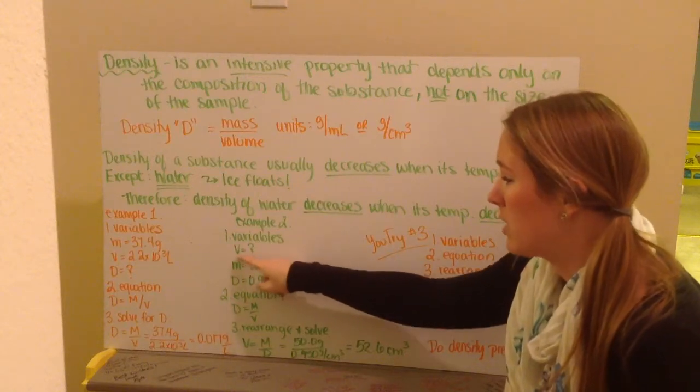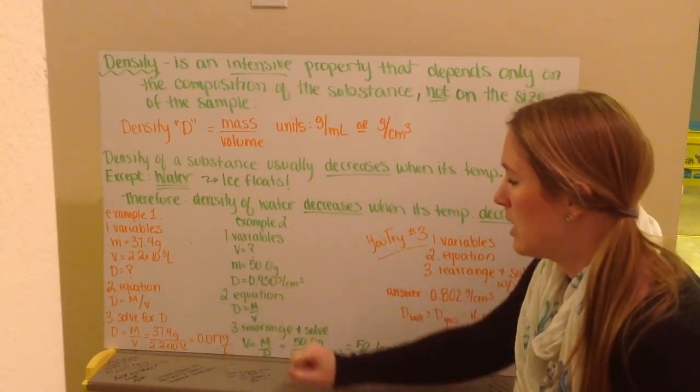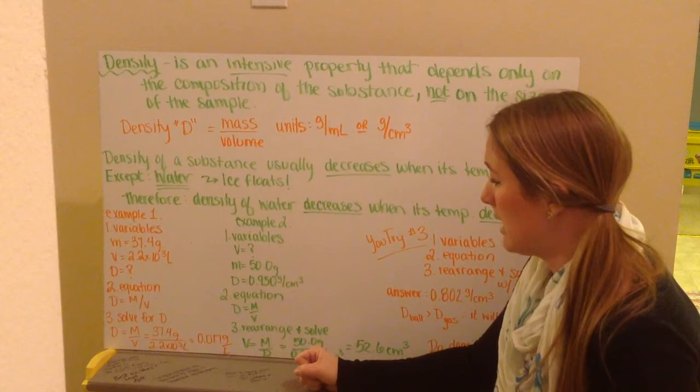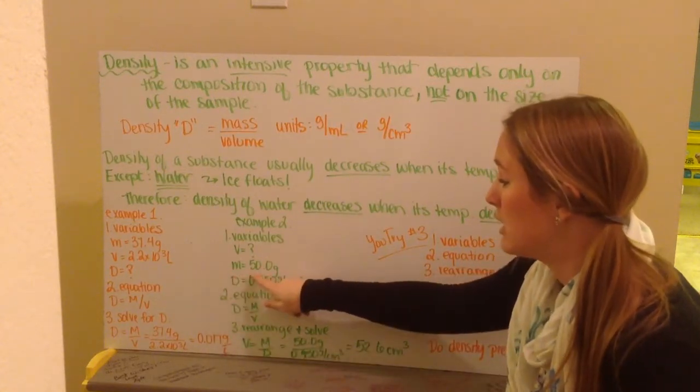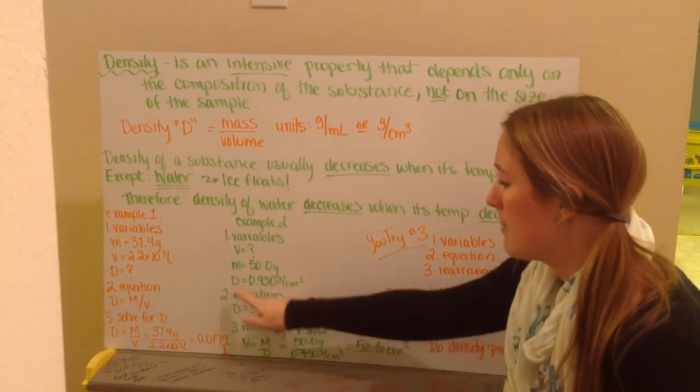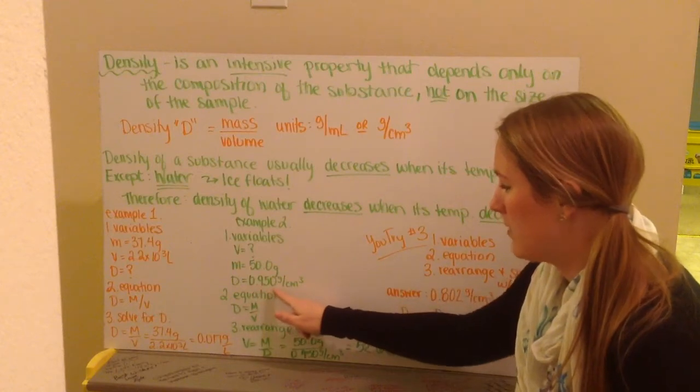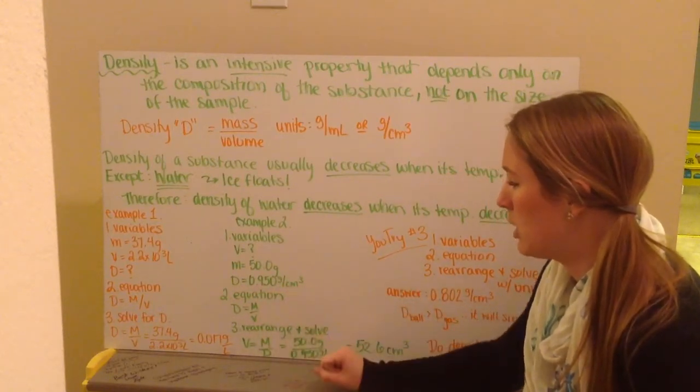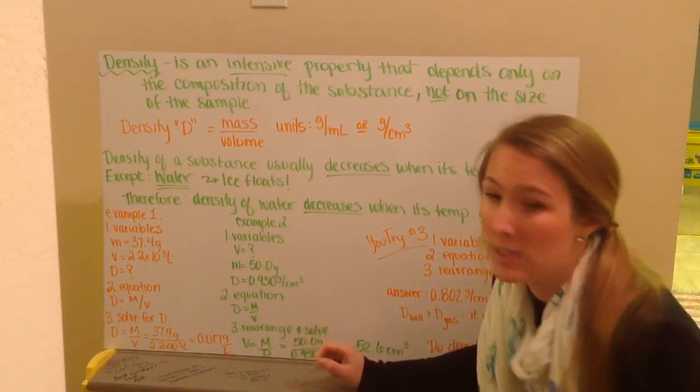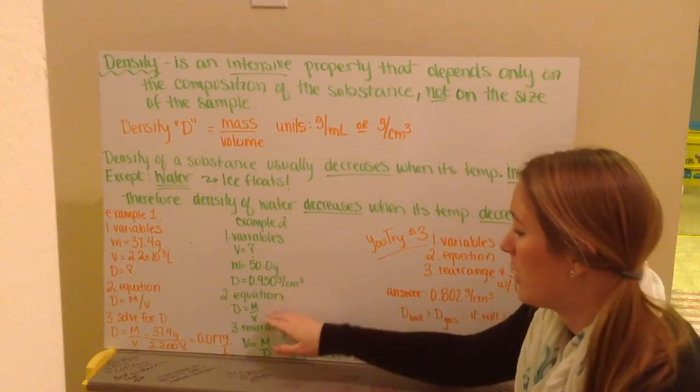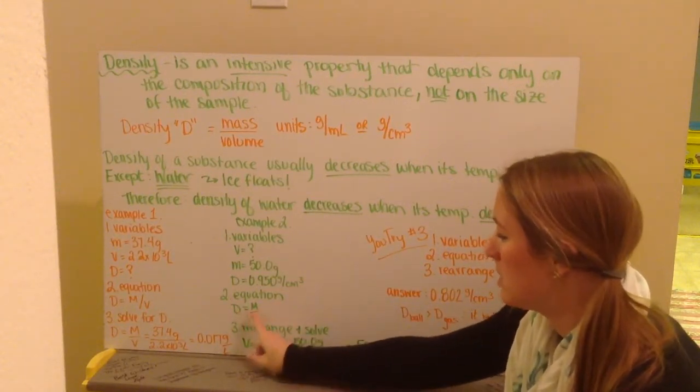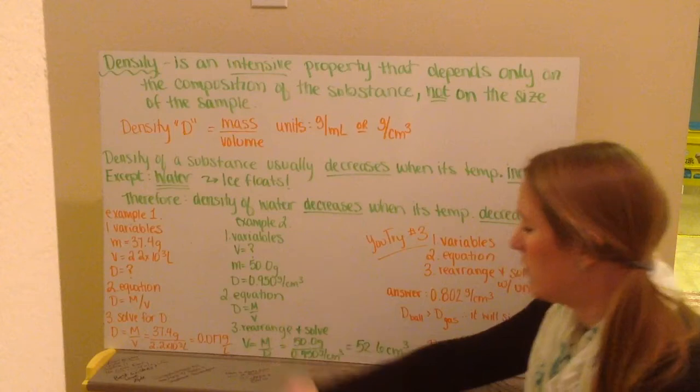We are looking for volume. So I have my volume equals a question mark because I don't know what that is yet. I'm told my mass is 50.0 grams. My density is 0.950 grams per centimeter cubed. Step number two is I write down my equation. My equation for density is d is equal to m over v, my mass over volume.